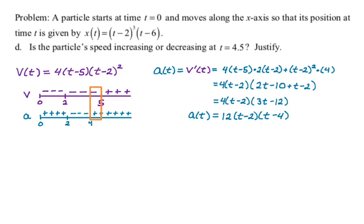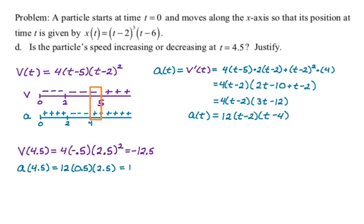So I'm actually ready to answer the question at that point, but I think I probably shouldn't have done this. So instead, a better way of doing it is to actually just find v(4.5). And so let's substitute. So that's 4 times negative 0.5 times 2.5 squared, which is 4 times negative 0.5 is negative 2, 2.5 squared is 6.25. So multiply negative 2 times 6.25, we get negative 12.5. And then a(4.5) is going to be 12 times 0.5 times 2.5, which actually works out to 15.